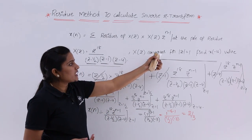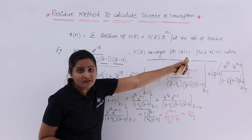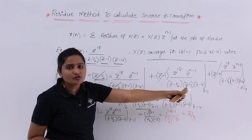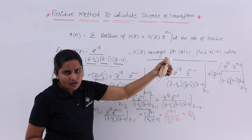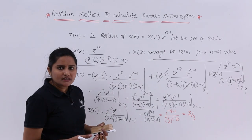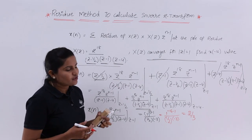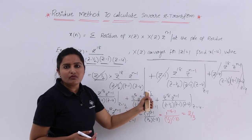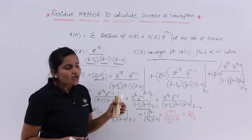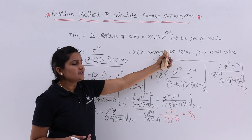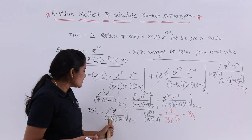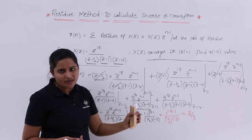For example, if X(Z) converges for |Z| > 1, then you need to consider the residue at Z = 4. If it converges for |Z| > 1/2, then all residues — at Z = 1/2, Z = 1, and Z = 4 — must be considered. According to the ROC given, however many residues fall within that range, that many residues are included in the final answer.